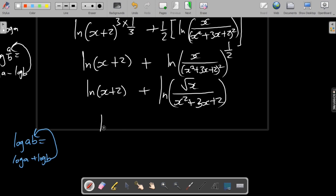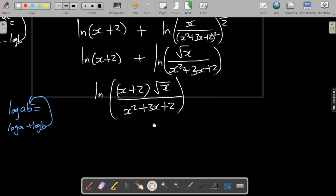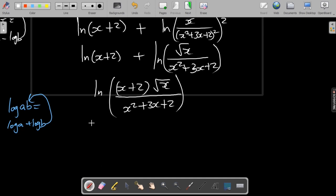If we multiply them, this is what we're going to have: the ln of x plus 2 multiplied by the square root of x over x squared plus 3x plus 2.